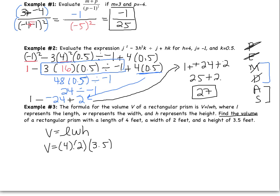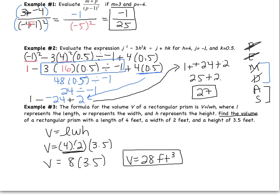Now multiply: 4 times 2 is 8. Then 8 times 3.5 — since 3.5 is 3 and a half: 8 times 3 is 24, and 8 times one half is 4. So 24 plus 4 equals 28. Remember that volume is always in units cubed, so the volume is 28 cubic feet.